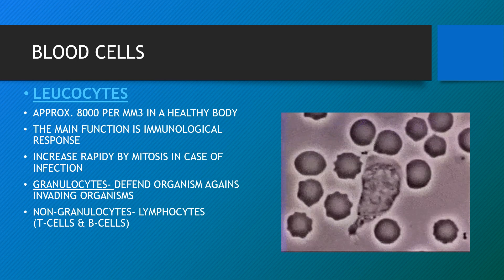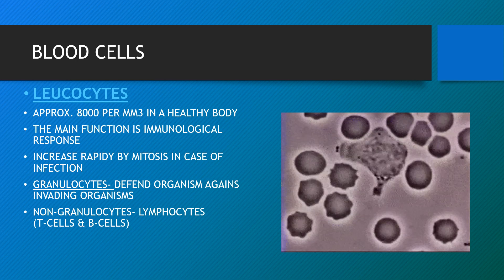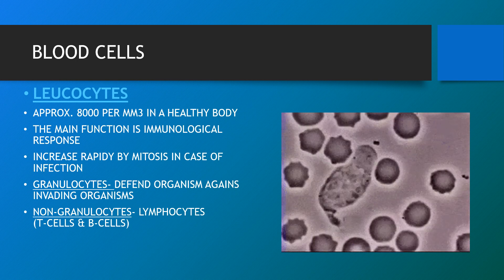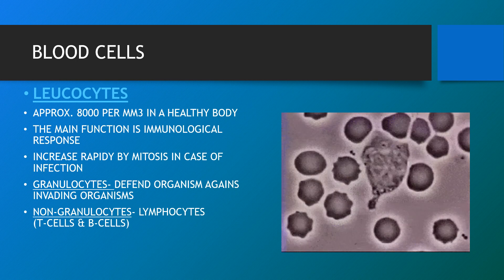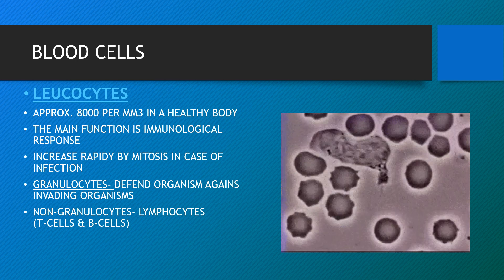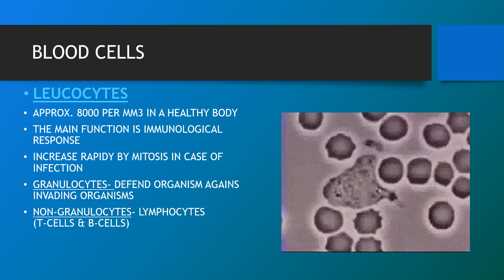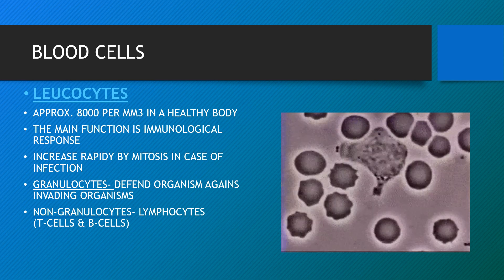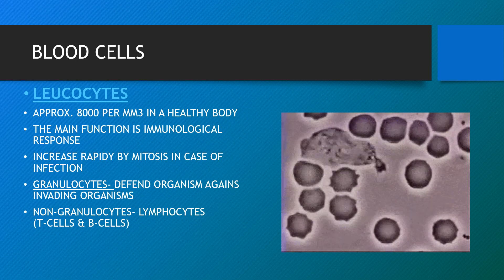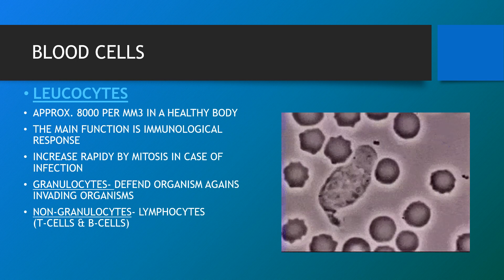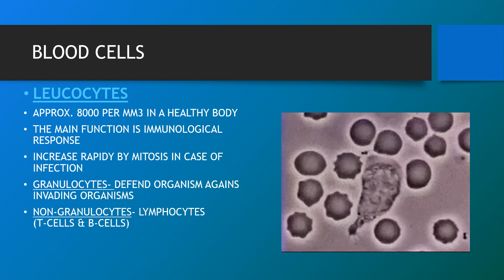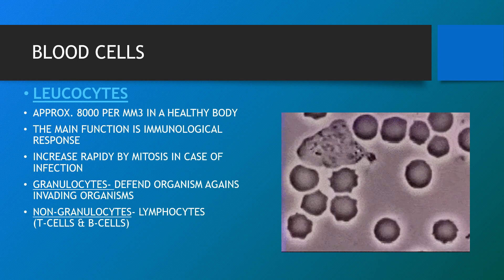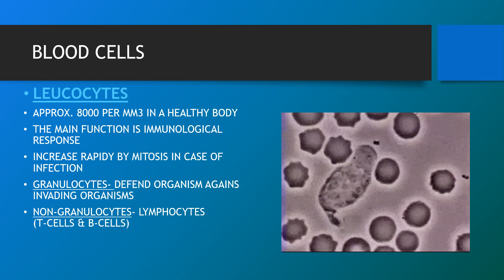White blood cells, also known as leukocytes, are immune cells that circulate in the blood and lymphatic system. Their main function is immunological response, increasing rapidly by mitosis in case of infection. Granulocytes defend organisms against invading organisms, are attracted by toxins in the tissues, and can pass through capillary walls. Non-granulocytes include lymphocytes — T cells and B cells — which produce antibodies. Monocytes eat bacteria and other microorganisms.